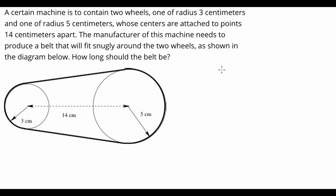What is up guys, we've got a geometry question today, one with a certain machine that's got to contain two wheels, one of radius three, one of radius five, whose centers are attached to points 14 centimeters apart. The manufacturer of this machine needs to produce a belt that will fit snugly around the two wheels as shown in the diagram below. How long should the belt be?